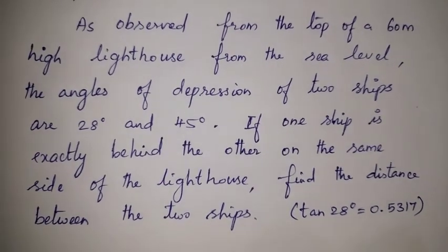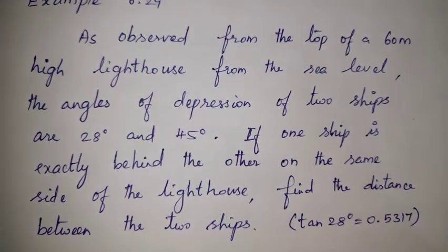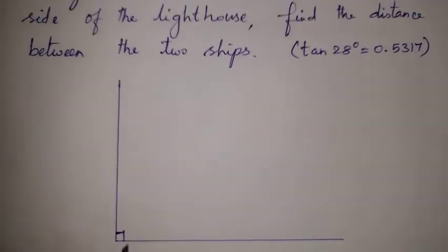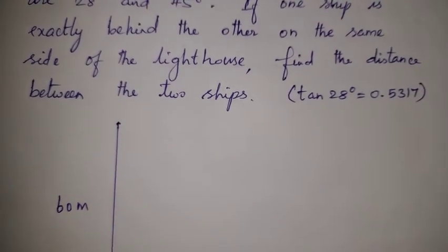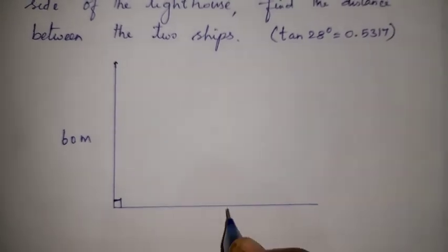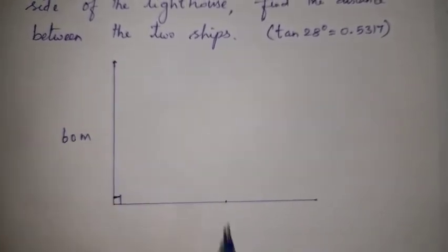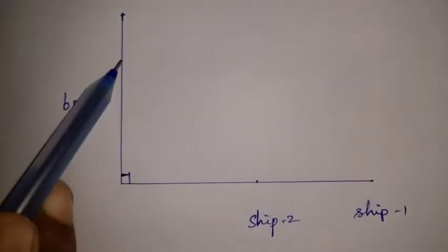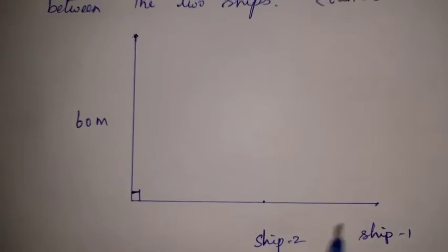At sea level, draw a horizontal line. The lighthouse is a vertical line, perpendicular to the sea level, so the angle is 90 degrees. The top of the lighthouse is at 60 meters height. From the top of the lighthouse we observe ship number 1 and ship number 2. The line of sight starts from the top of the lighthouse and ends at each ship, which is at sea level.